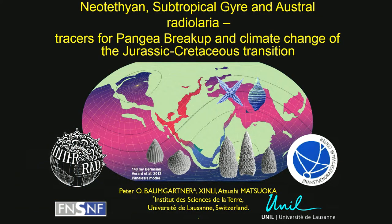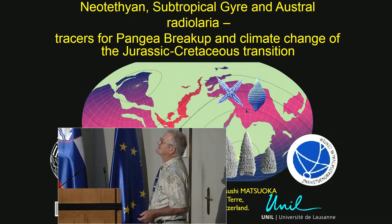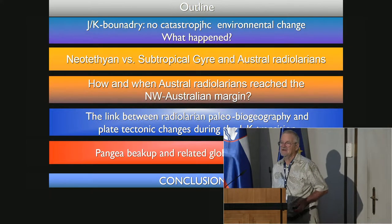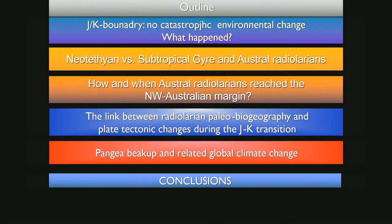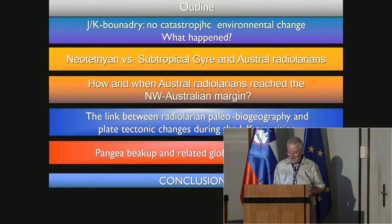We go through different points. We first want to look at where the rates are, what is Neotethian versus Subtropical Gyre and Austral Radiolarians — what are they? Then we will see how they got into the Argo Basin from somewhere around Antarctica, and we will look at the relationship between plate tectonics and these Radiolarian occurrences. We come finally to the climate change, which I think the passage from Jurassic to Cretaceous was triggered by Pangea breakup and by a paleo-oceanographic and paleoclimatic reorganization of mainly Tethys and Panthalassa.